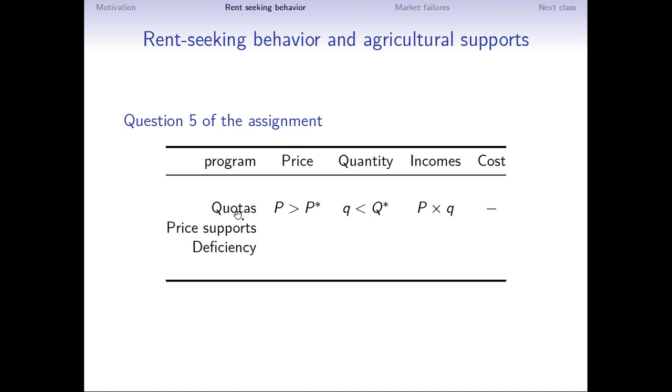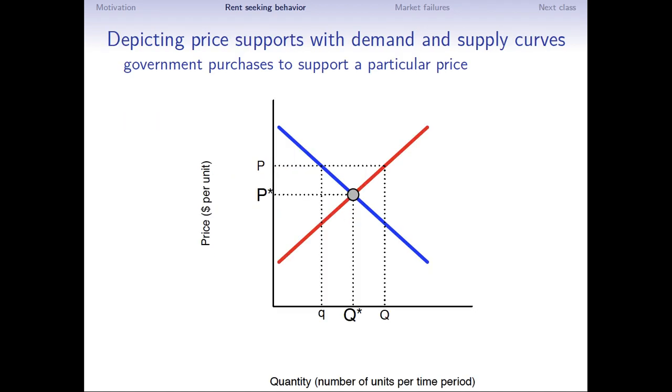So to sum up, quotas lead to a higher price. This mathematical symbol means P is greater than P star. They reduce the quantity that consumers purchase. Q is less than Q star. And the incomes of producers is P times Q star, which is greater than the initial P star times Q star, because demand is inelastic. The government faces a minimal cost.